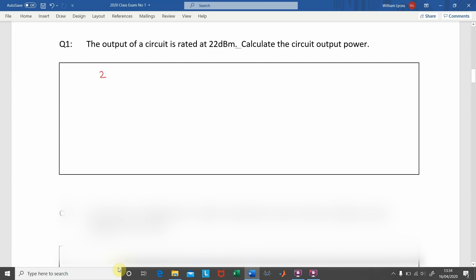In this question, we are told the output of a circuit is rated at 22 dBm, and we are asked to calculate the output power.